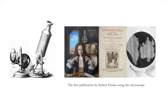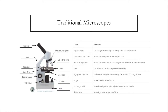Hans Lippershey and his son Zacharias Hansen created the first microscope in the late 1590s. However, it wasn't until 1665 before the first study using a microscope was published. There have been many attempts to improve the design of the optical microscope to upgrade its resolution, but the optical microscope still remains fairly simple in design and is used everywhere from classrooms to chemistry labs.